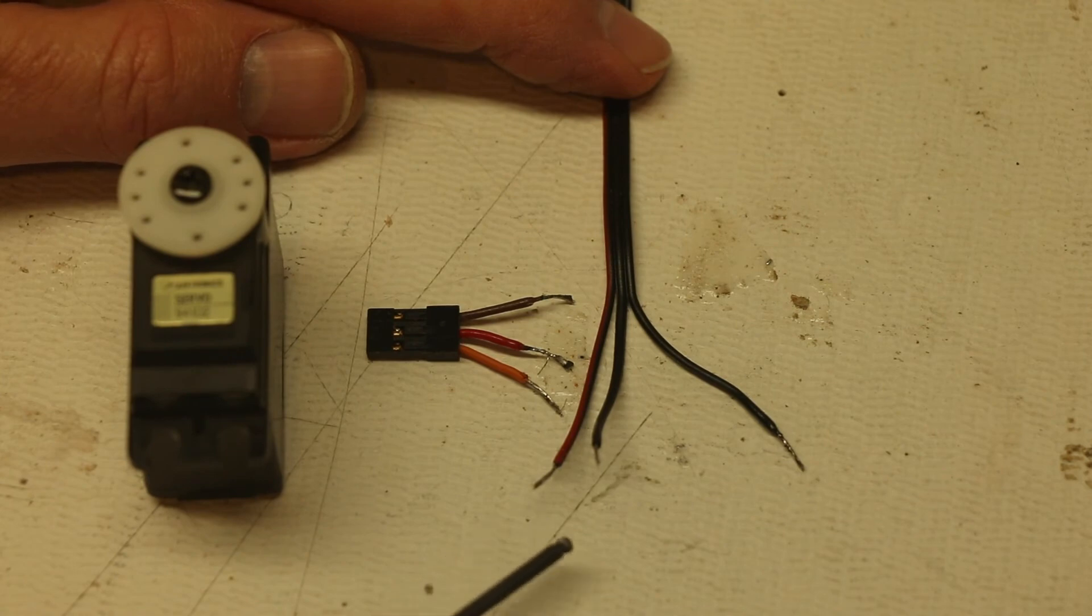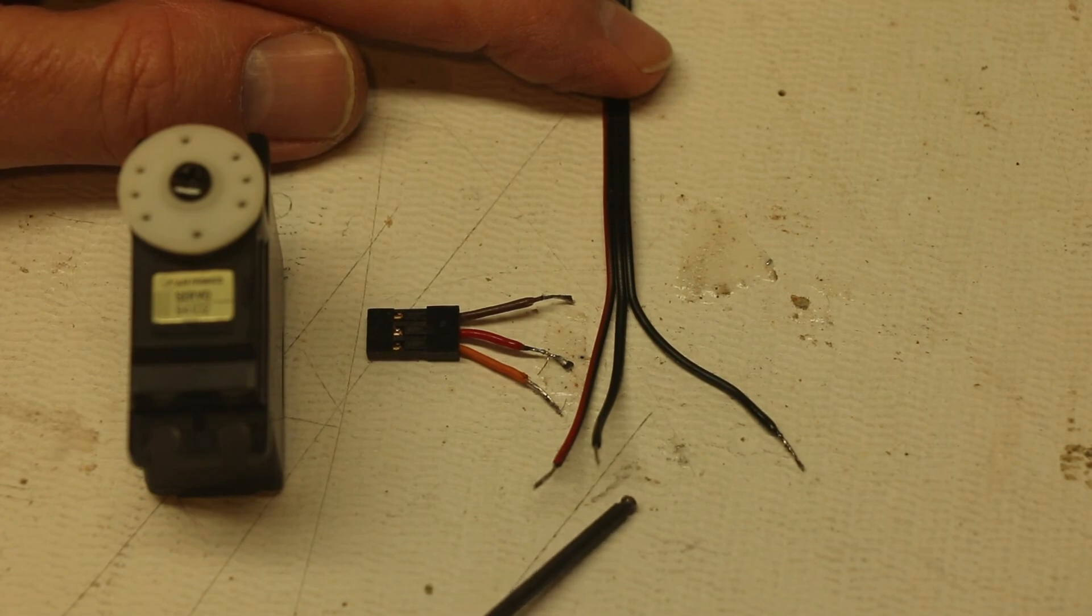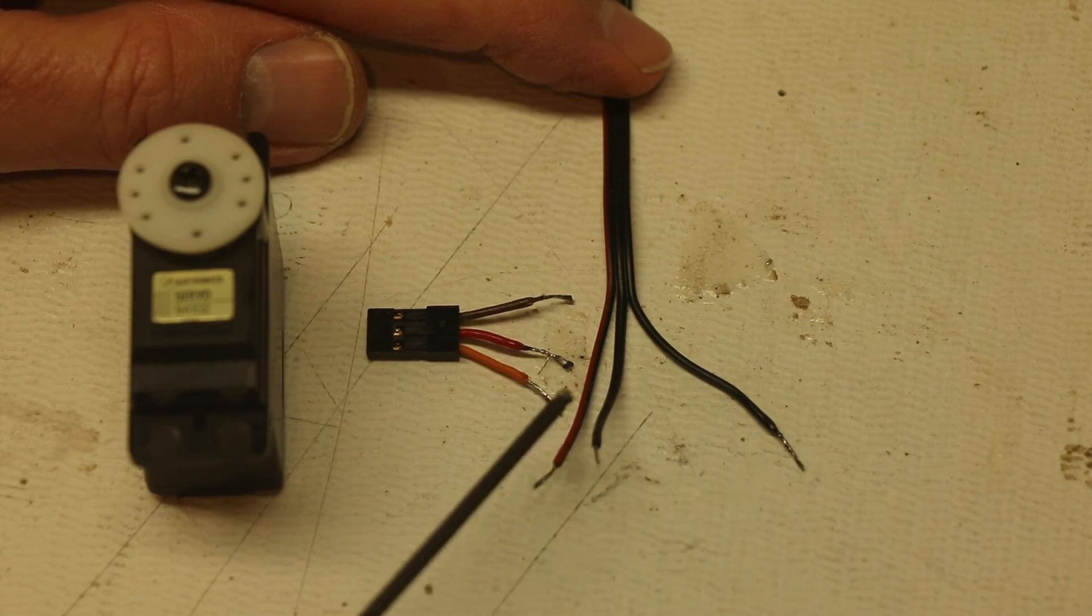Now what I've learned is that red is power. The middle one is ground and then the signal's out here so there's no color differentiation between the ground and the signal.